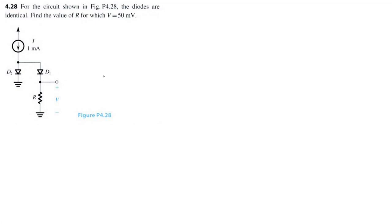Solve problem 4.28 from Microelectronics Circuits 8th edition by Cedron Smith. For the circuits shown below, the diodes are identical. Find the value of R for which V equals 50 millivolts.